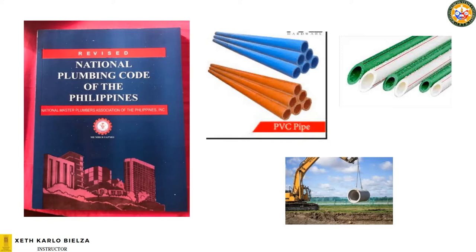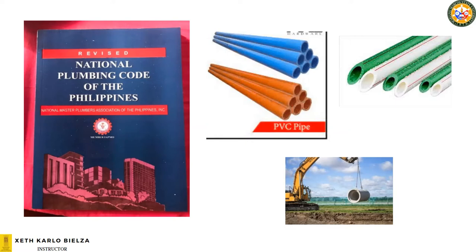For water supply, we may use rigid pipe — PPR, polypropylene random. And for drainage, we may also use, for storm drainage, concrete pipes.